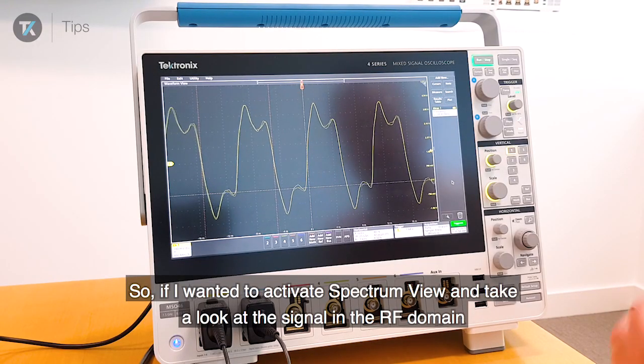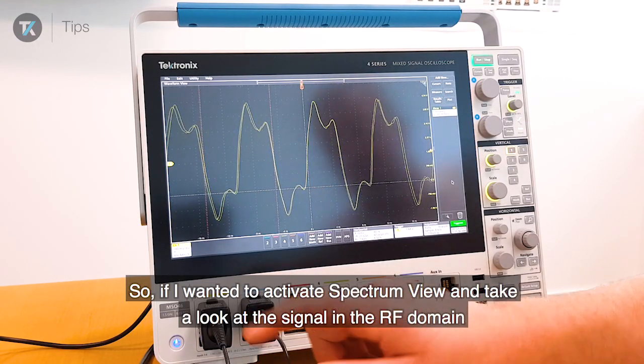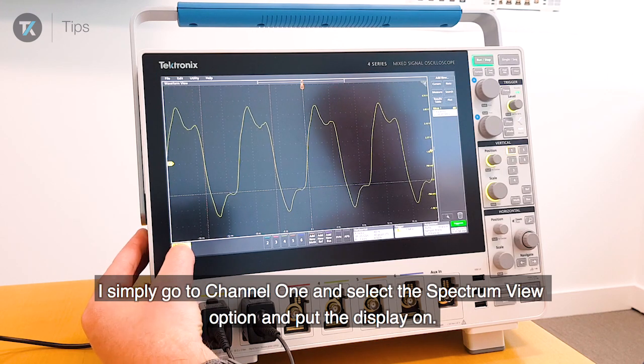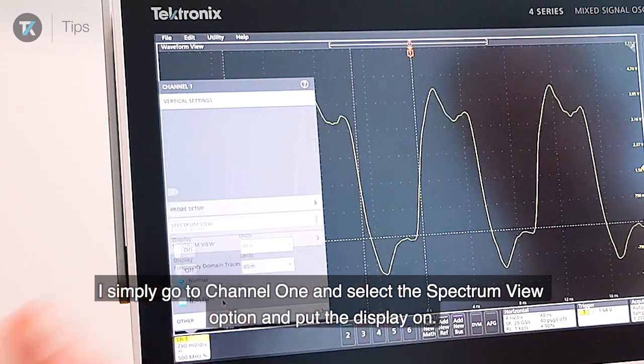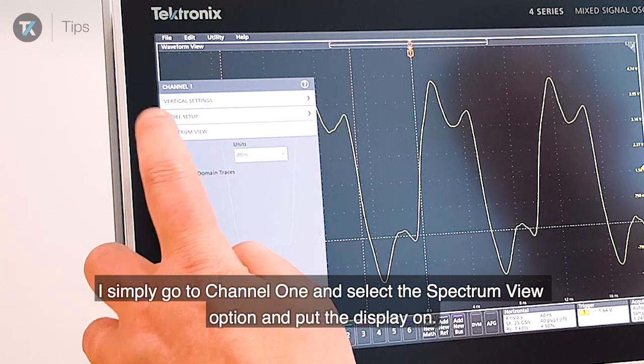If I wanted to activate SpectrumView and take a look at the signal in the RF domain, I simply go to Channel 1 and select the SpectrumView option and put the display on.